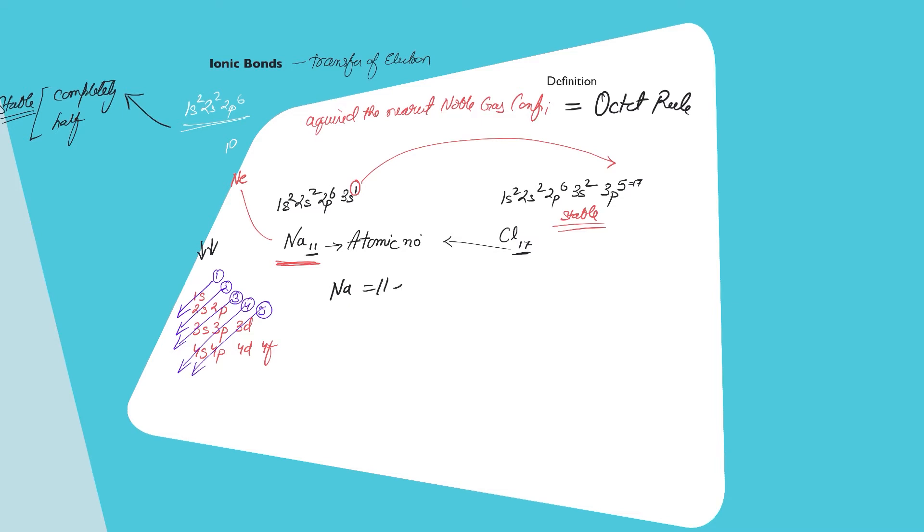So sodium right now has 11 electrons, 11 protons. Now electron means negative charge, proton means positive charge. Now if you were to remove one electron and give it to chlorine, which had 17 electrons and 17 protons, that means 17 negative charges, 17 positive charges, both the atoms were neutral. But if you were to give an extra electron from sodium to chlorine, that means now you have reduced one charge. So this 11 becomes 10, that means 10 negatives.